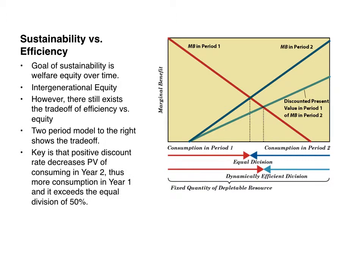The key is that there is a positive discount rate that decreases the present value of consuming in year two, so it's not as valuable to consume in year two. Thus, there is more consumption in year one, exceeding the equal division of 50%. If the discount rate was zero, then consumption in period one versus period two would be equal at 50%. But because there is some present value, we would value period two less than period one.